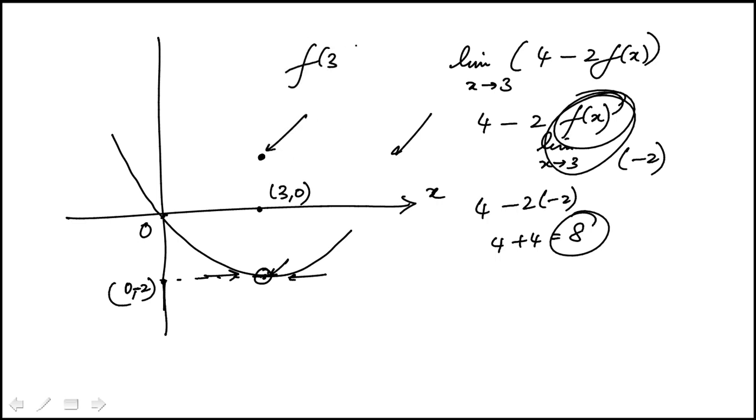Now the fact that the value of the function at 3 is 1 doesn't mean anything, because for limit we're looking at where the value is approaching as you go from the right and left where the function is.